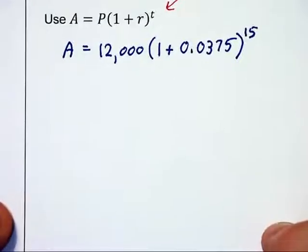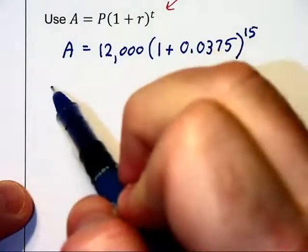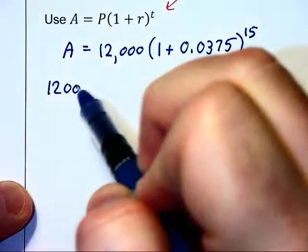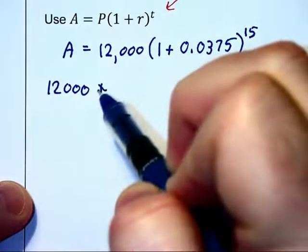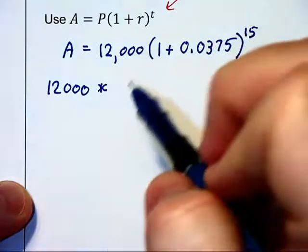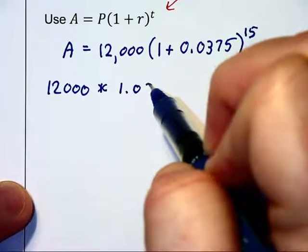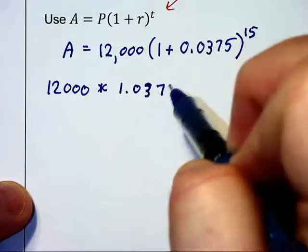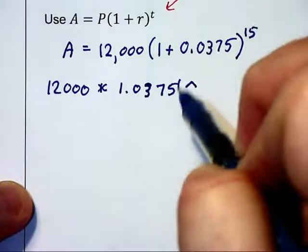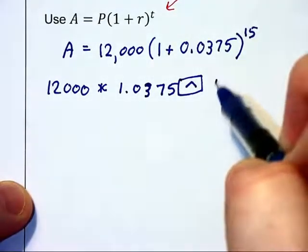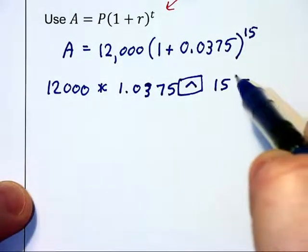Now this is a calculator problem. Basically you are going to type in your 12,000 on your calculator, hit your multiplication sign, and then type in 1.0375 raised to the 15th power and then hit your equal sign.